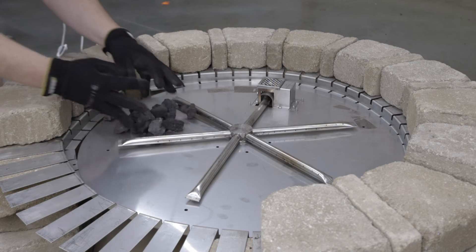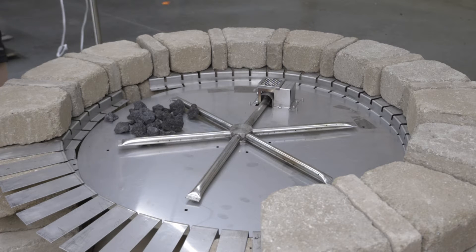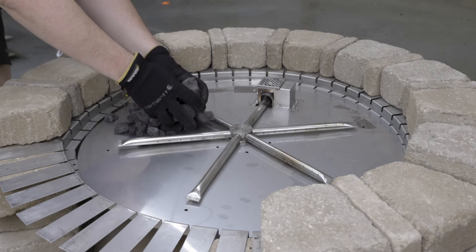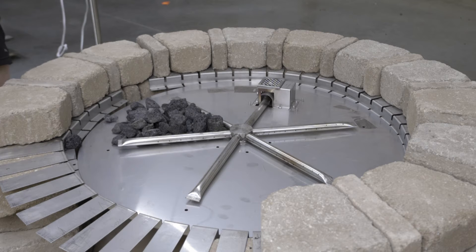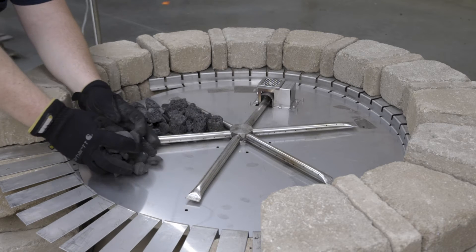Use gloves and place the media around the burner tubes and arms to just cover the burner tubes and arms. You should still be able to see small glimpses of the burner tubes and arms through the media.